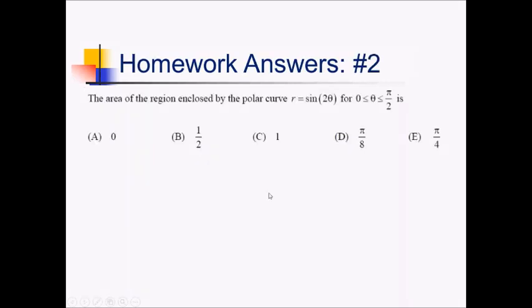For this problem we want the area of the region enclosed by r equals sine of 2 theta over the interval from 0 to pi over 2. So we in general need the area formula for polar area: the integral from a to b of 1 half r squared d theta. We need the a and the b, the limits of integration. It looks like 0 to pi over 2 is going to be it, but we were allowed to use a calculator on this, so let's just double check that.